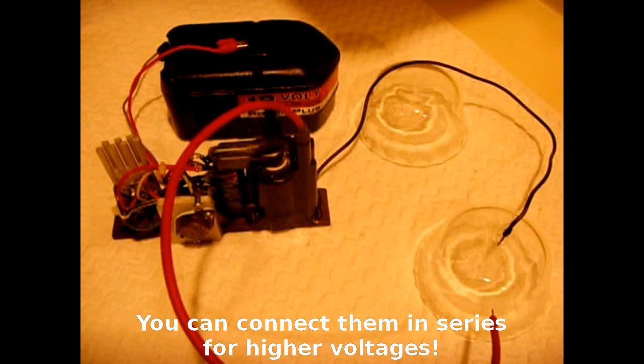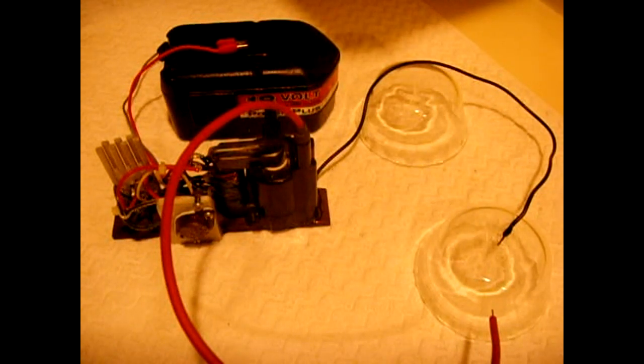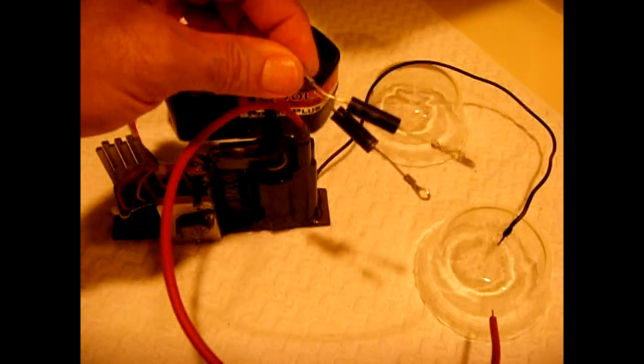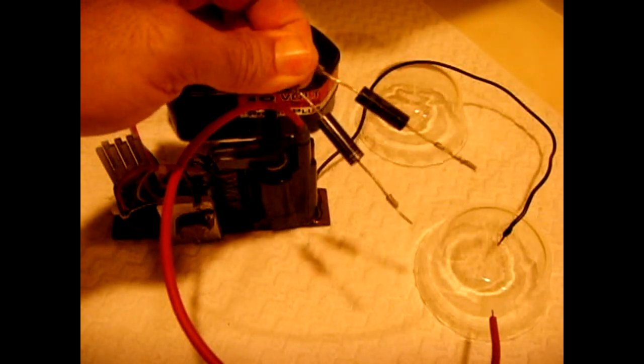So just keep that in mind if you're looking to do a cascade multiplier or any other kind of multiplier or high voltage circuit. Just go look for some microwave ovens and you can grab these 12,000 volt diodes.